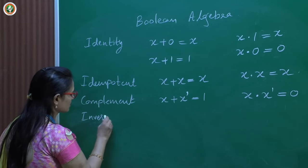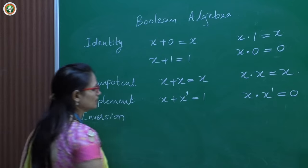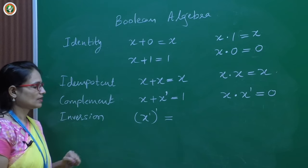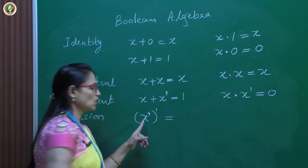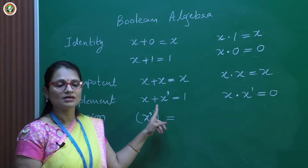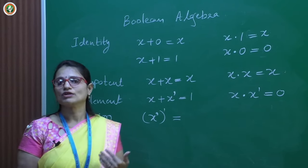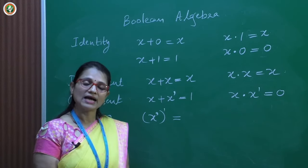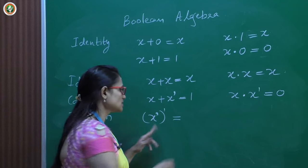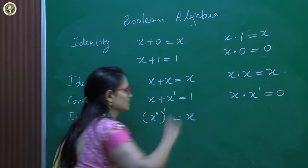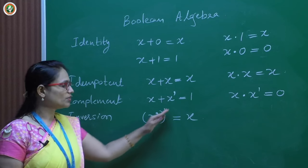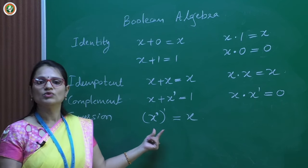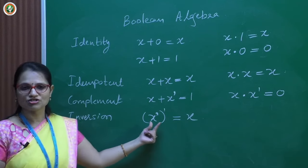The inversion theorem (double complement) states that NOT(NOT(x)) = x. When you complement a value twice, you get back the original value — the first complement changes the value, and the second complement restores it.